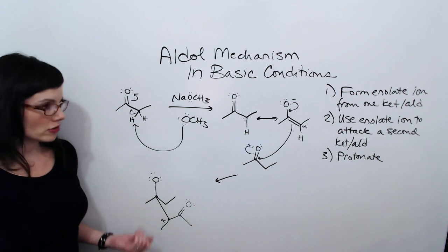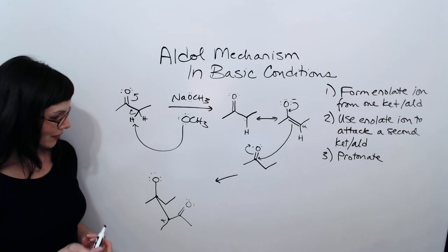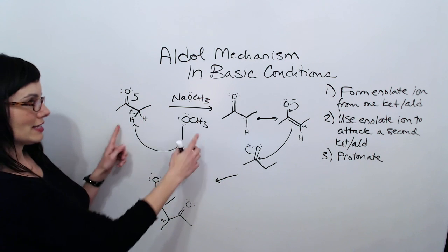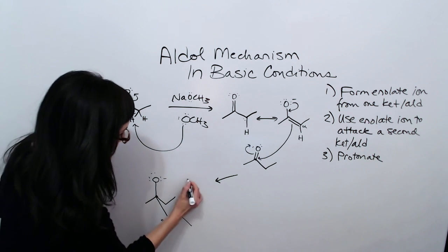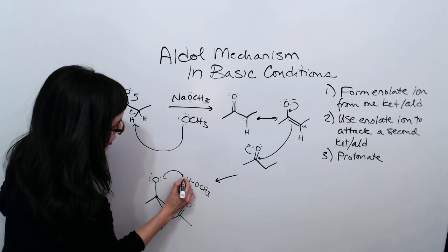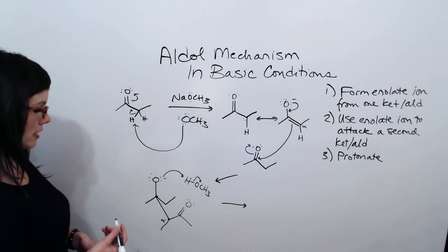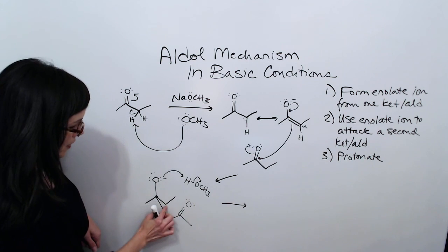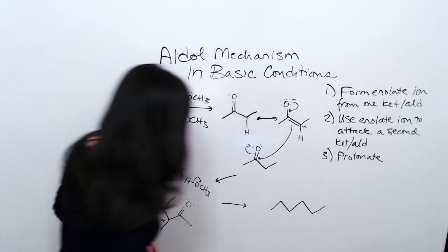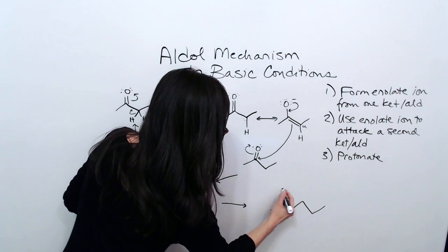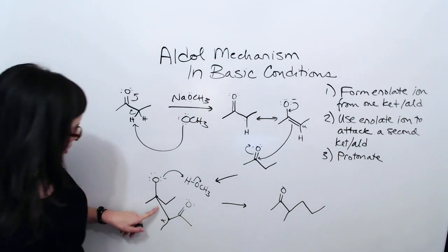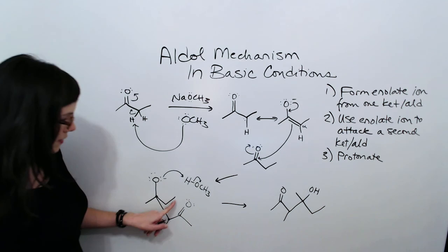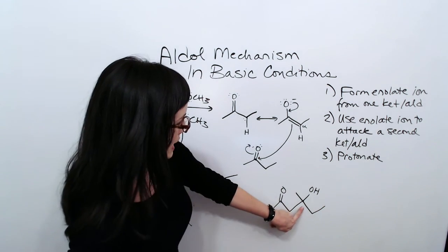My next step is simply to protonate this O, and I can do that with the protonated base, which is now the methanol molecule. This O can just go out and grab a proton and we'll get our final product. This has six carbons in its longest chain. I can put the carbonyl on carbon 2, carbon 3 has a methyl, carbon 4 has a methyl and a hydroxy, and carbons 5 and 6 are clean. So this would be our final product — a beta-hydroxy ketone.